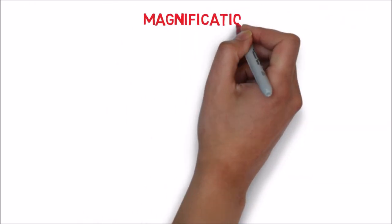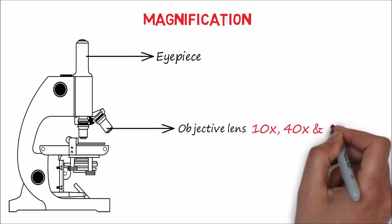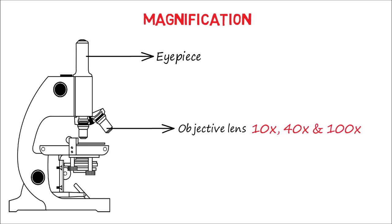Now, how to calculate the magnification: Most microscopes have three or four different objective lenses with different magnification ranges, usually 10x, 40x, and 100x.